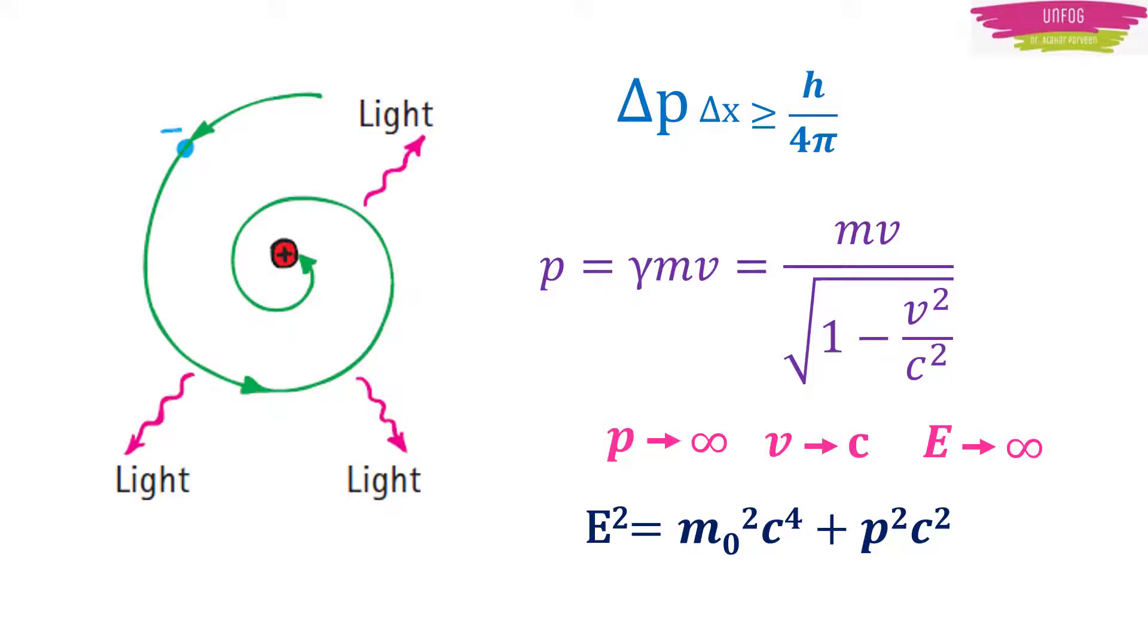So momentum of electron became infinite, leading the velocity of electron near to the speed of light. But we did all this proof by assuming that electron has fallen down into the nucleus.